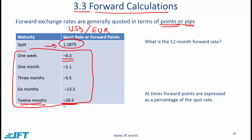Now let's understand what minus 26.5 means. The minus is straightforward — all this is saying is that the forward rate is less than the spot rate. So we can look at that minus sign and immediately say that the base currency, in this case the euro, is weakening, or we also say that the euro is the weaker currency.